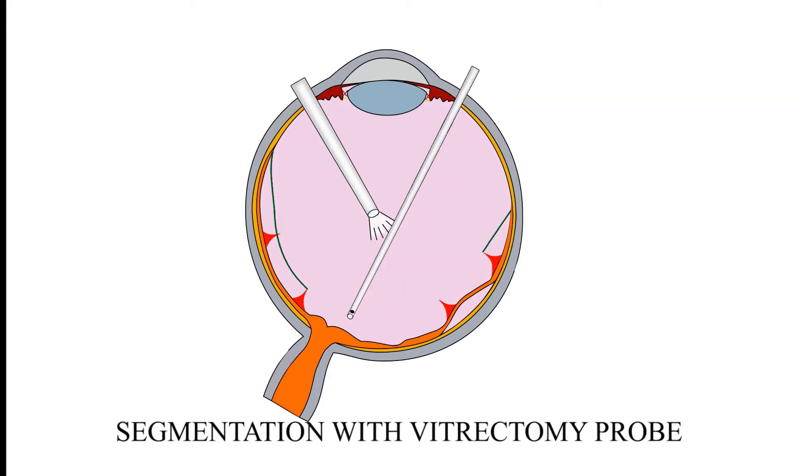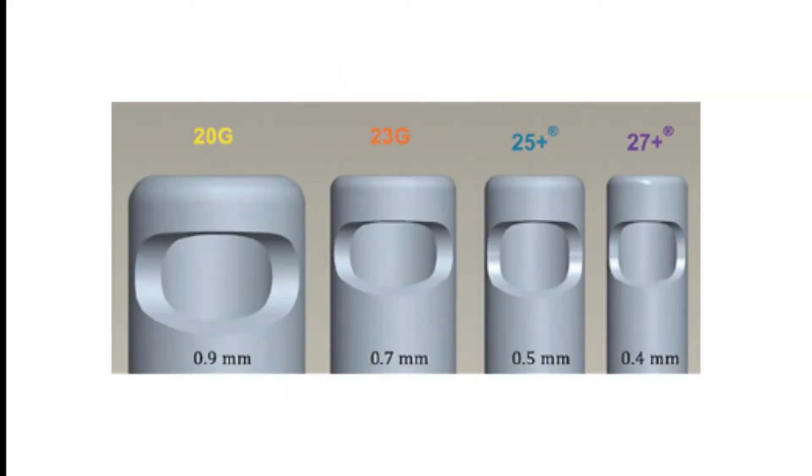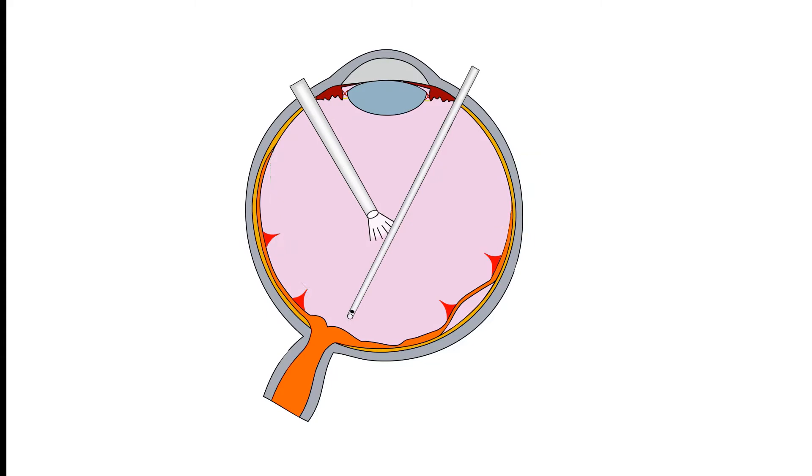Segmentation is easier with 23 and 25 gauge cutters as the cutter in the smaller gauge instruments is closer to the tip than it is with the 20 gauge. With 25 and 27 gauge instrumentation, segmentation can frequently be achieved using the cutter alone.